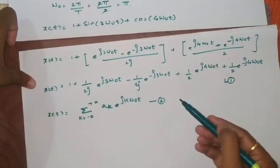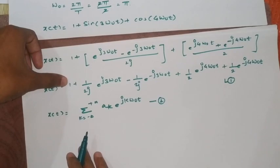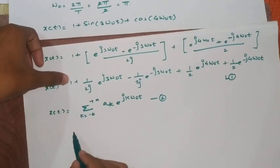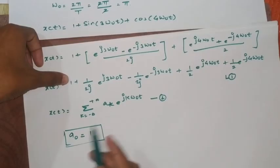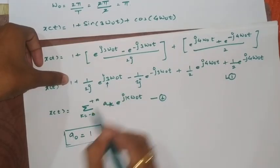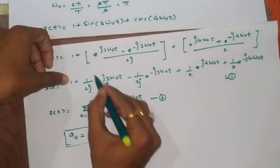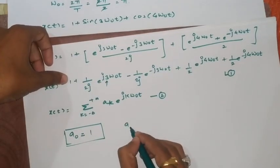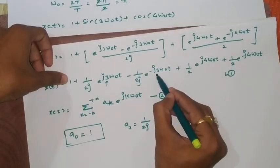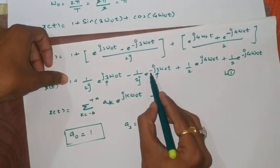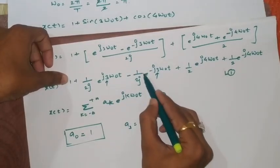Now if you compare both these equations the first term is 1, definitely it is going to be our constant term so we can put it as a0 as 1. Similarly we can proceed further, this is plus 3 that means this coefficient is going to be a+3 as 1 upon 2j. This is minus 3 here, so this term becomes a-3 which is 1 by 2j.